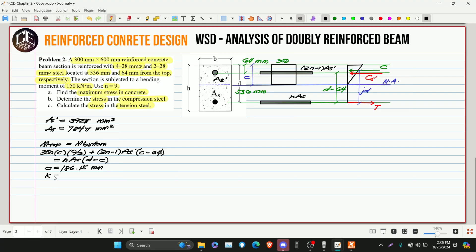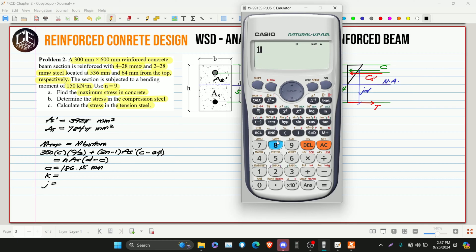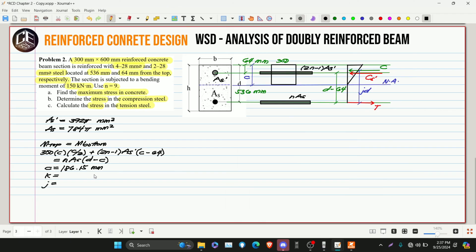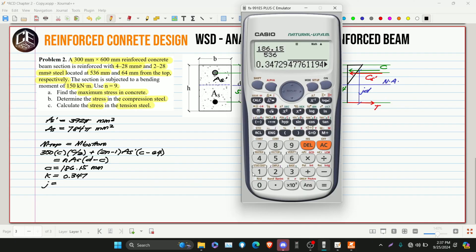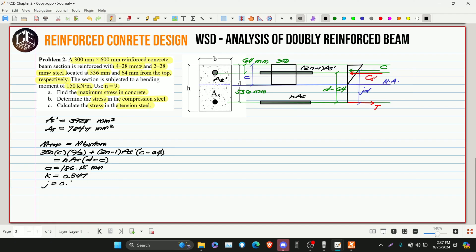So we can get the value of K and J. 186.15 divided by 536, so 0.347. Then 1 minus 1 third of K, which is 0.347. So this is 0.884.